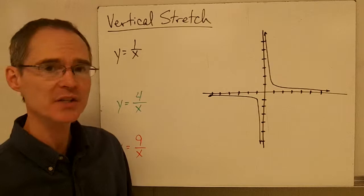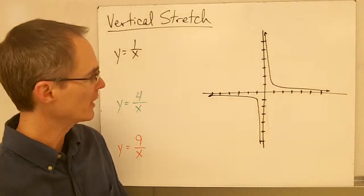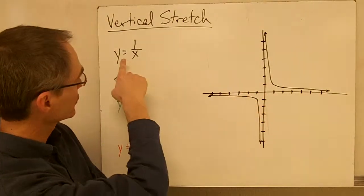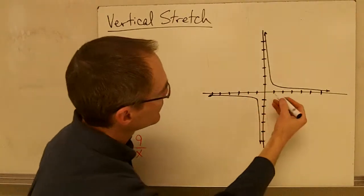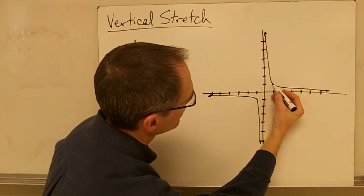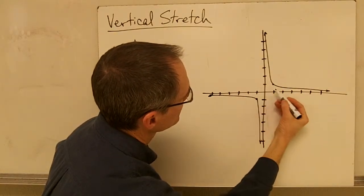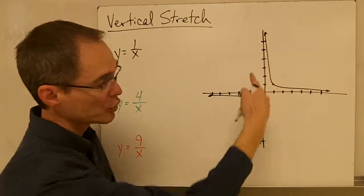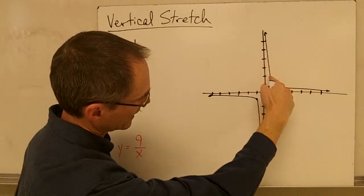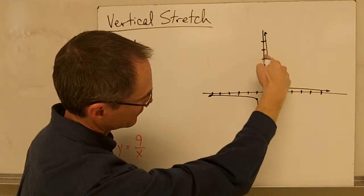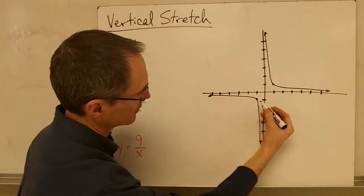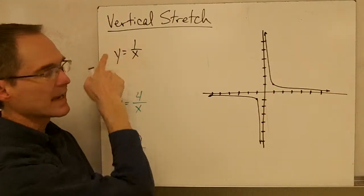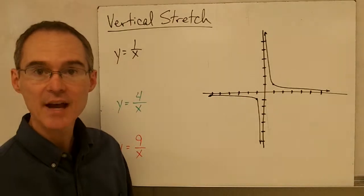Before we talk about that, we first need to talk about something called the corner points. Notice that on this graph of my inverse variation parent function — that's y equals 1 over x — these points right here, we call those the corner points. Those are the points on each one of the two pieces that represent where it makes the change from going down to going across. These corner points are controlled by the a value, or the k value.